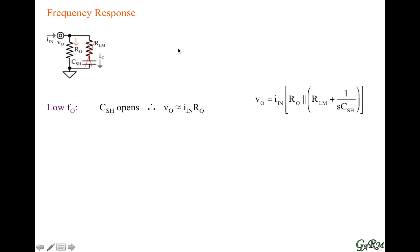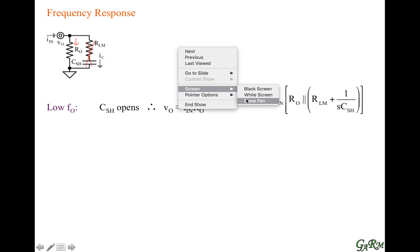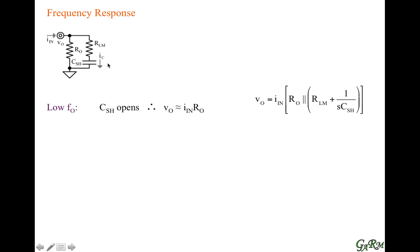As frequency continues to increase, at some point the capacitor current is high enough that it draws current from the output and the output voltage starts dropping. This capacitor path essentially shunts the output resistor, and in doing so it steals current away and produces the effect of a pole.